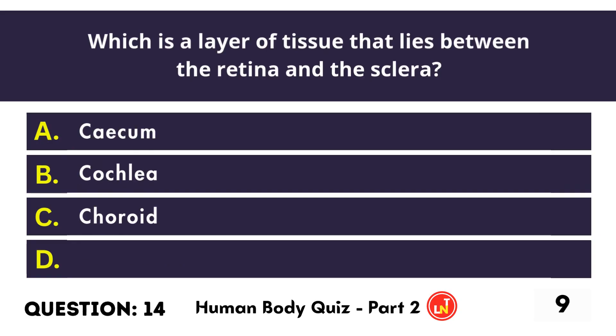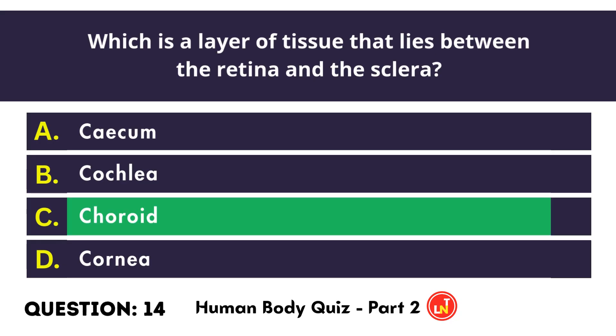Which is a layer of tissue that lies between the retina and the sclera? Choroid.